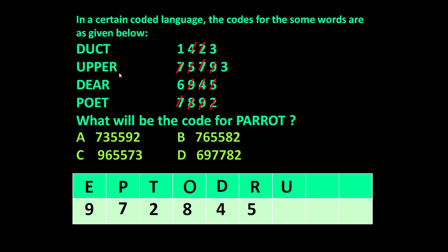Let us take the letter U. In 'upper', only U is left unaccounted for, and in 'duct' and 'upper', U is common and 3 is common. So the code for U will be 3.